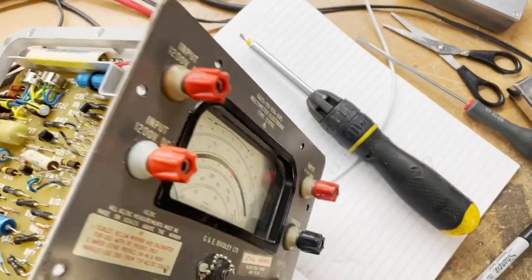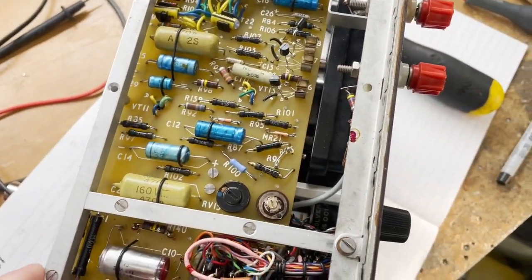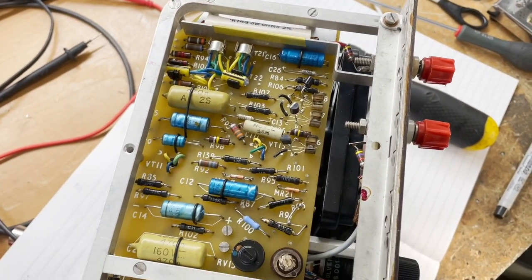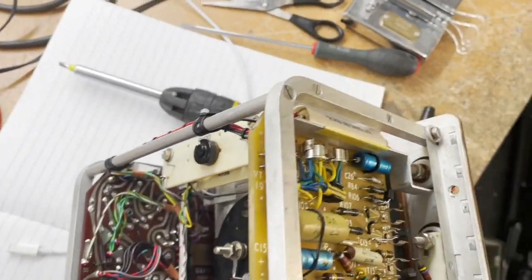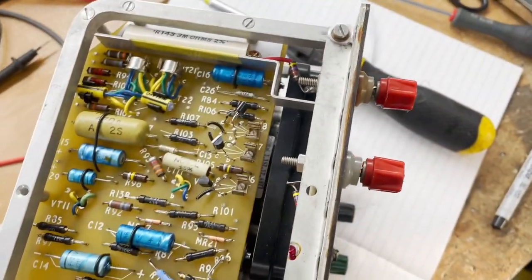It uses this amplifier and then somehow the signal is processed and you get some sort of reading. It is really complicated compared to a normal multimeter but it is quite a nice piece of vintage electronics.